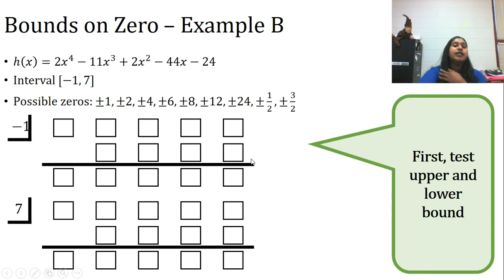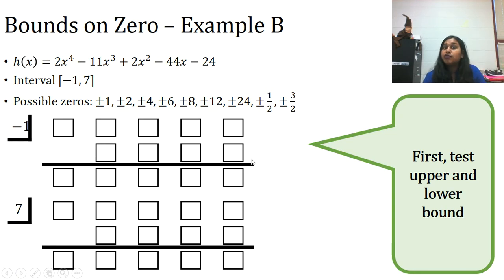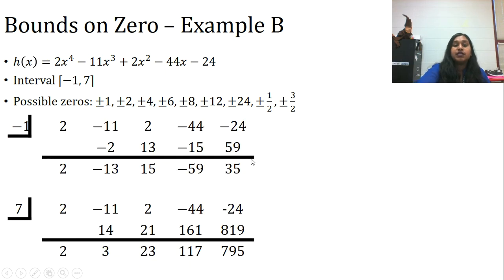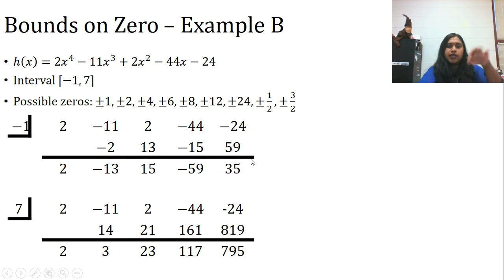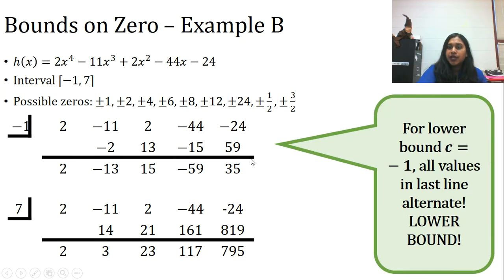But before I can touch the zeros, let's make sure our boundaries are correct. I said negative one and seven, but how do I know those are true boundaries? What if it shifted or I misinterpreted my graph? I'm going to test it using synthetic division. For the lower bound — negative one — all I have to know is that my signs alternate in the last quotient line. The values are 2, -13, 15, -59, 35 — positive, negative, positive, negative — it alternates. So I know negative one is my lower bound.